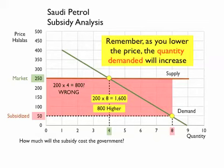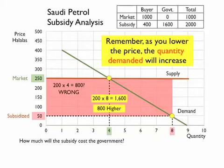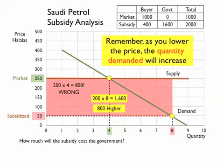It would be 800 higher than your original estimate. In summary, at market price the buyer would spend 1,000 halalas a week to buy 4 liters, and the government wouldn't spend anything. If the government subsidizes the price down to 50 halalas, the buyer would be spending 400 (50 times 8), but the government would be spending 1,600 in subsidies, so the total cost would be 2,000. Because the price is so much lower, consumption doubles — this buyer would be consuming 8 liters a week instead of 4.